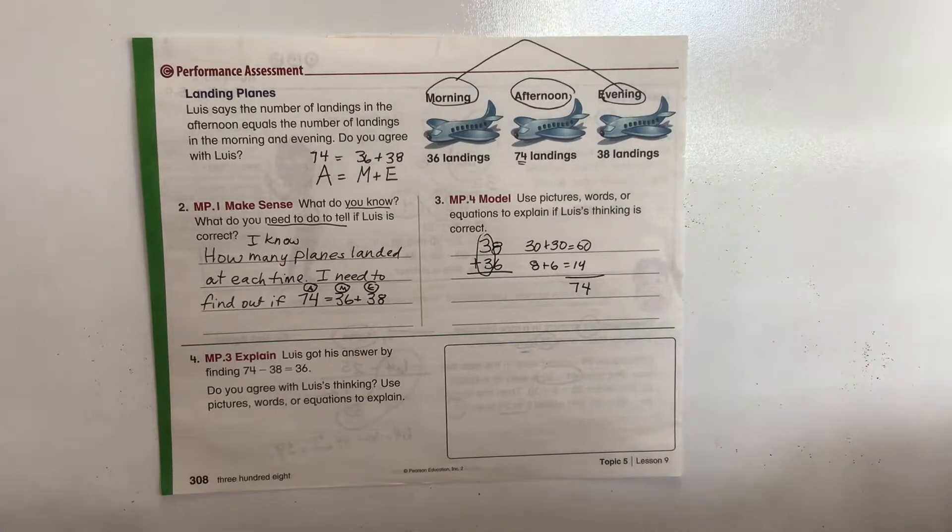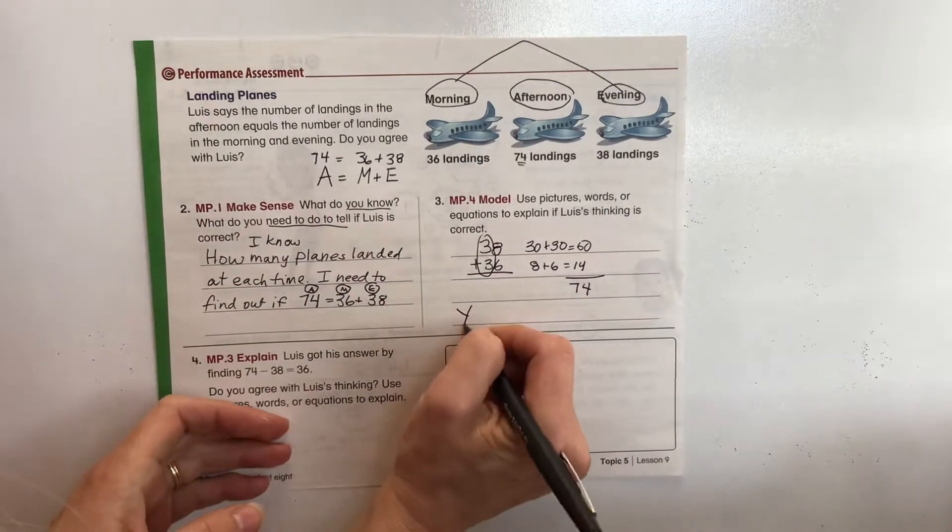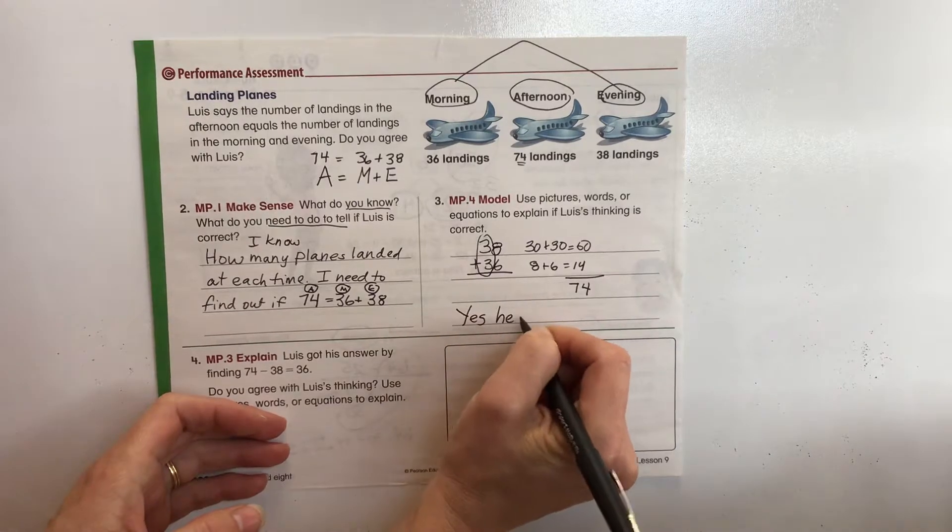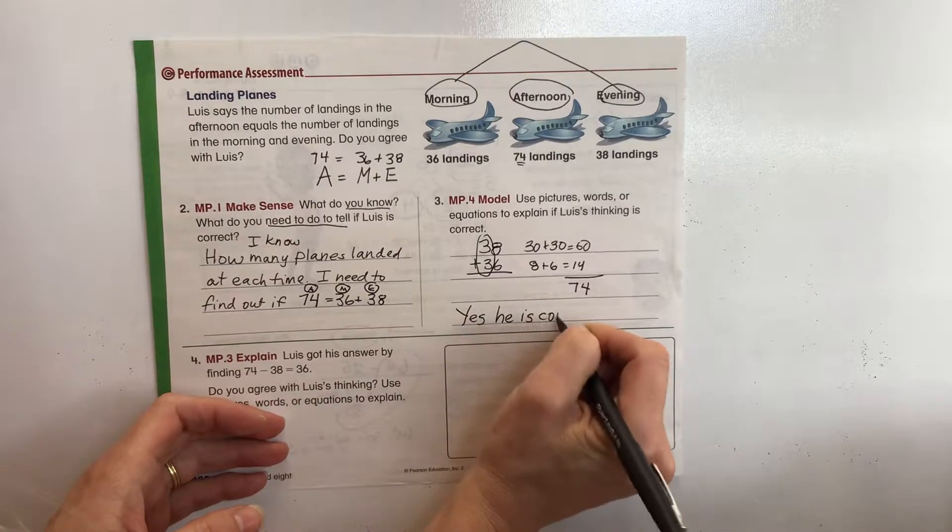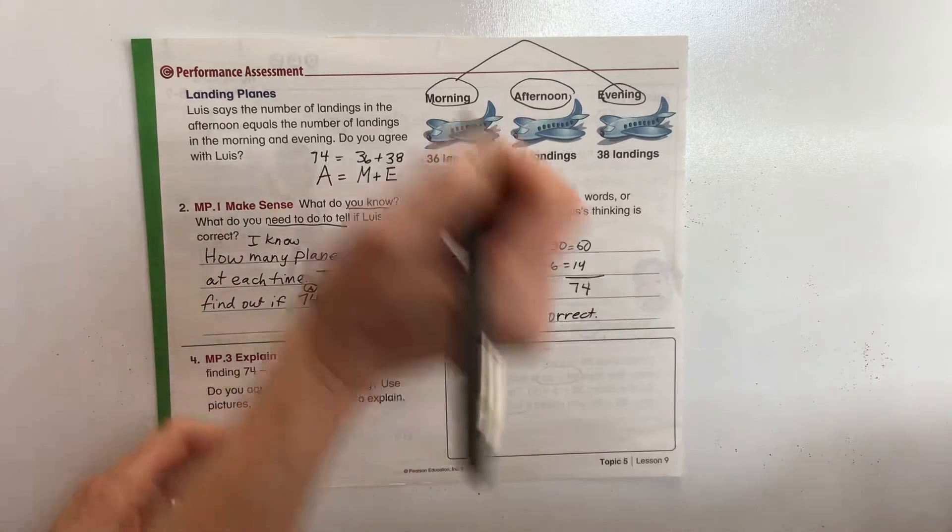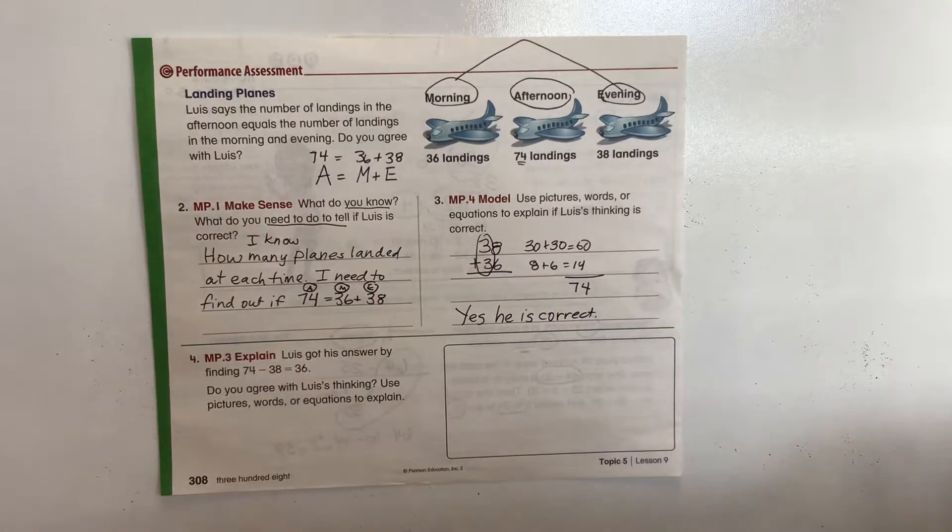And if they want to write a sentence at the end, they can say, yes, he is correct. We like to see that writing component that the students can also use words to explain what they're doing.